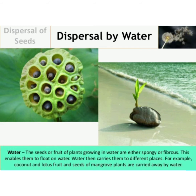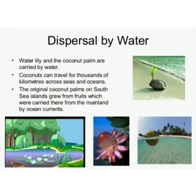The next method is dispersal by water. Seeds of many plants growing near water bodies are dispersed by water. These seeds have a spongy or fibrous coating, so it is easy for them to float in water far away from the mother plant. For example: lotus, lily and coconut plants.